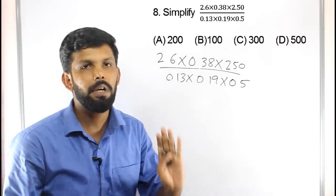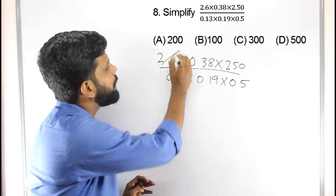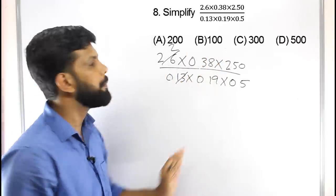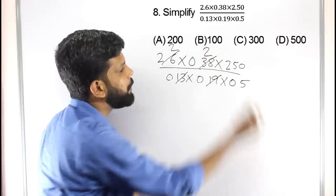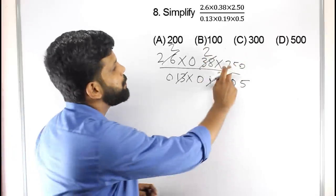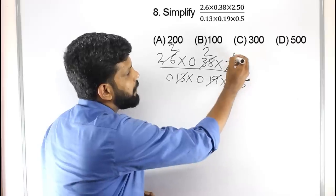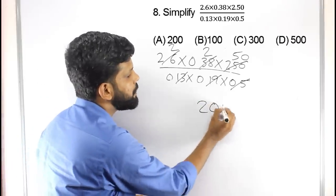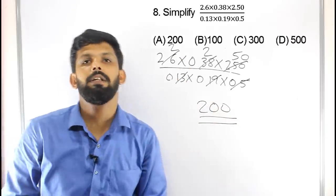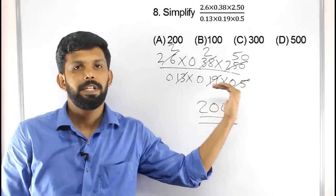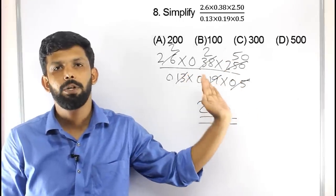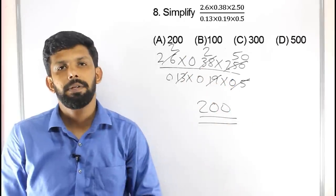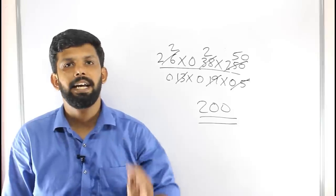Continuing simplification: 26 divided gives 13, and 38 divided gives 13. If you have a value of 50, you can work through it the same way. The correct answer follows from this direct calculation.